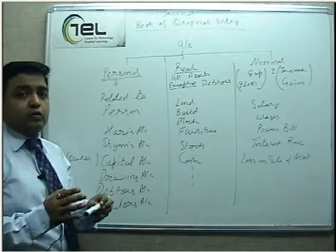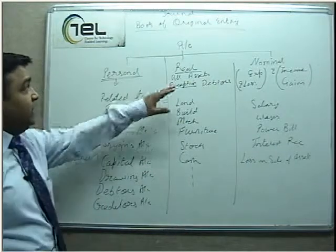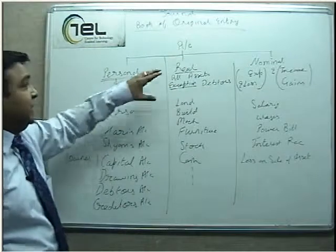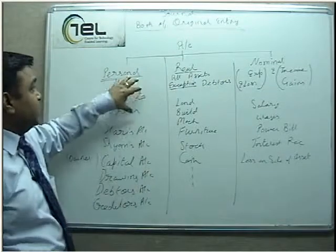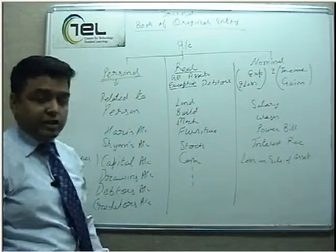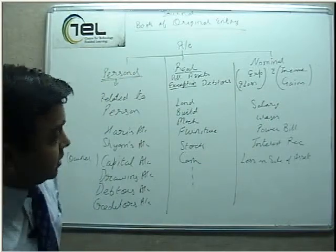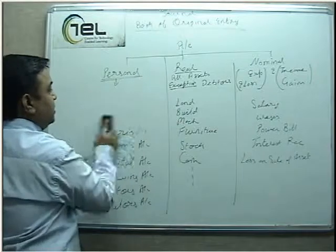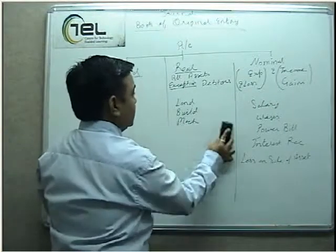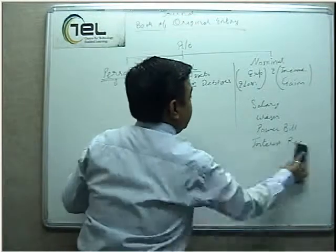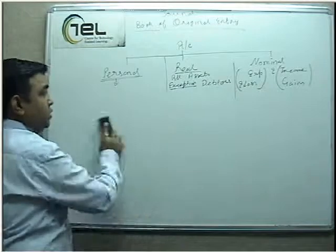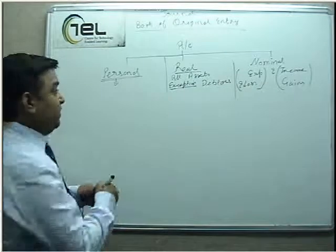The first and foremost thing is that whenever accounts are involved in a transaction, you must identify whether the account is a Personal Account, Real Account, or Nominal Account. Without clear-cut classification, no entry can be done in the right manner. Once you are finished with the classification, you must know which rules are to be followed for each type of account. Each category has its separate set of rules and no rule can be interchanged between categories.